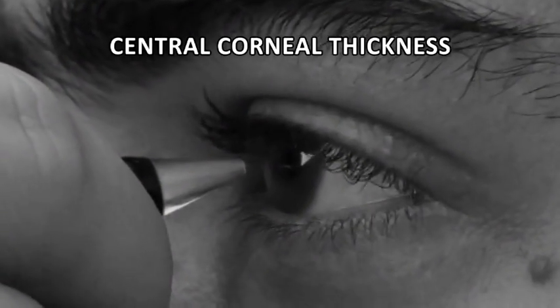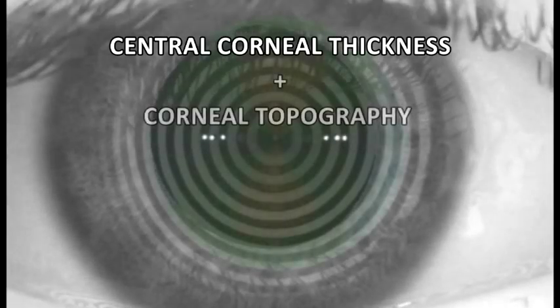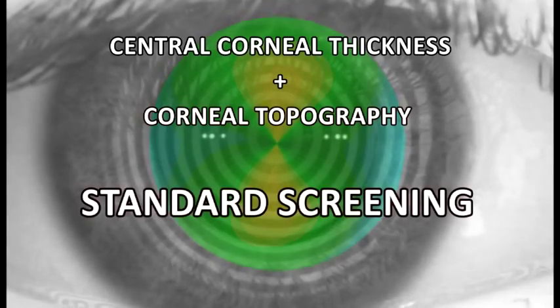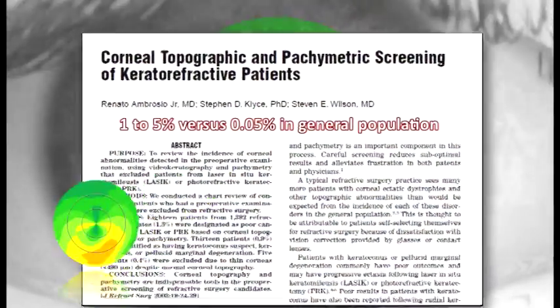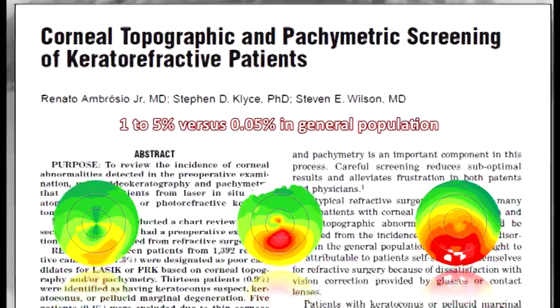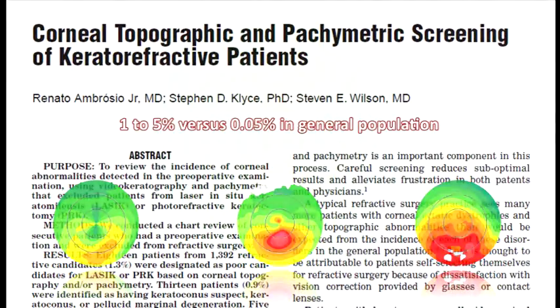Along with central corneal thickness, placido disc-based corneal topography has a historical role for screening ectasia risk. Studies involving corneal topography have found a much higher incidence of keratoconus and related ectatic diseases among refractive surgery candidates.